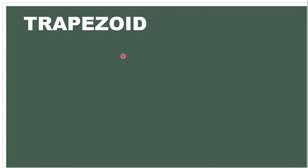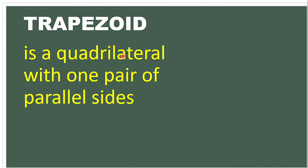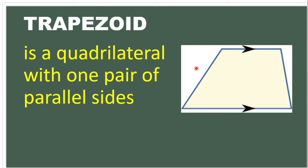We also have a trapezoid. A trapezoid is a quadrilateral with one pair of parallel sides. This is an example of a trapezoid — this side is parallel to this side, so we have one pair of parallel sides.